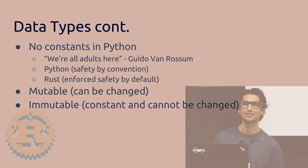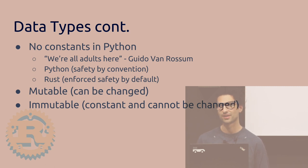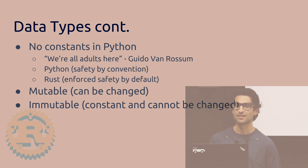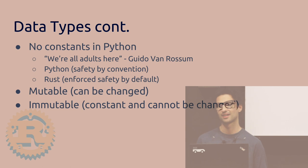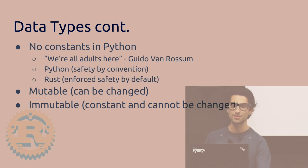In Rust, it's a little bit more of a paranoid approach. You have enforced safety, and it's also by default. In Rust, all variables are constants, and they cannot be changed unless you explicitly specify that they are not constant. So there's mutable and immutable — mutable means it can be changed, immutable means it cannot be changed.